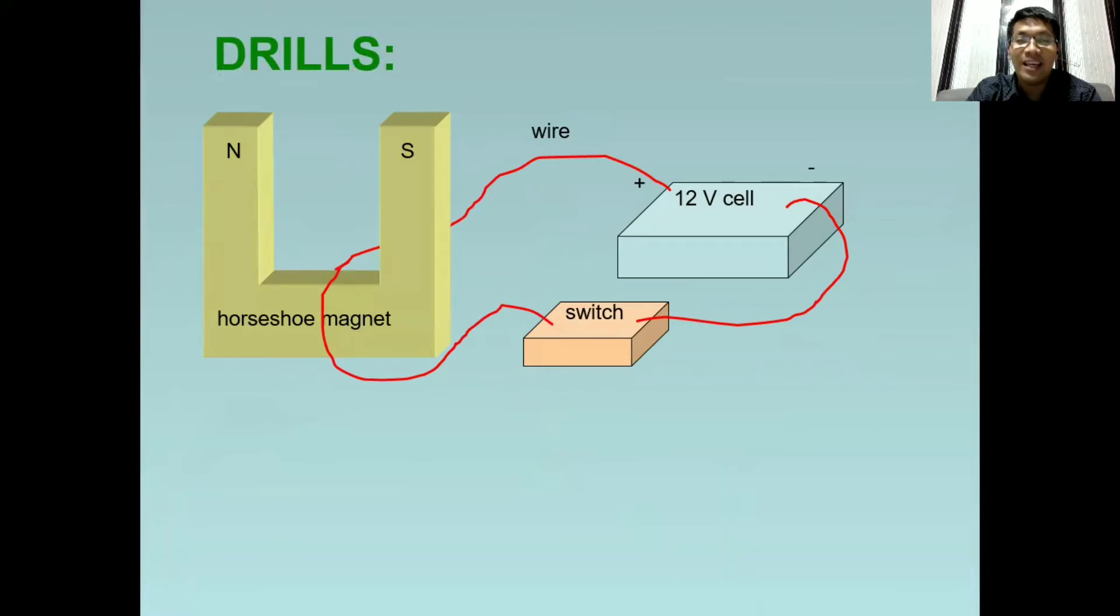Let us apply the concept of Fleming's left-hand rule in this drill. So we have this setup. So we have a battery with wire, then a switch, then a magnet. So our conductor here or the current carrying conductor is the red wire, which is placed here in the magnet. So what will happen to the wire when the switch is closed?